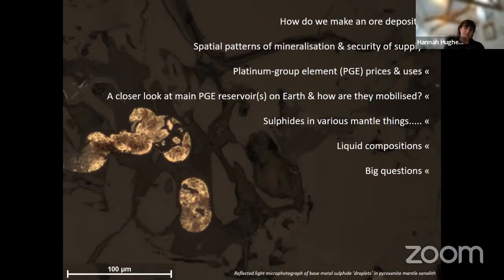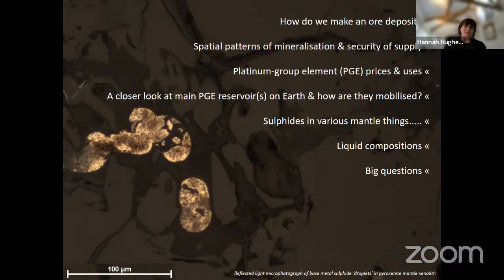Platinum group minerals are the main mineral hosts of these elements, and understanding what that means in terms of how we can mobilize them from the mantle up through the crust is key. Part of that touches on liquid compositions and the heterogeneity of lithospheric mantle in terms of PGE distribution and what that means for crustal mineralization. Finally, I'll end on some big questions in PGE geochemistry — the things we don't know very well — which I think we need to answer in the next few years or coming decade.